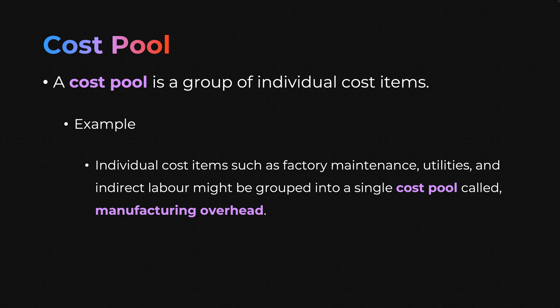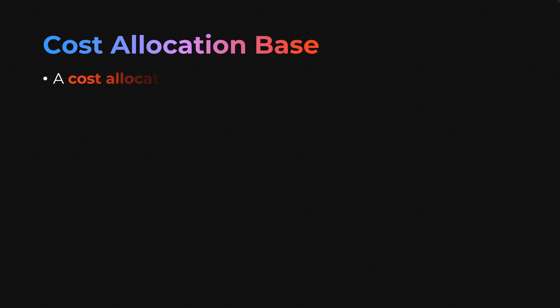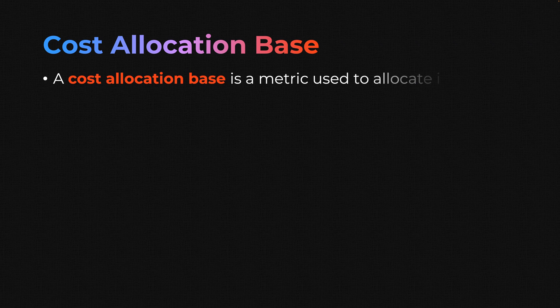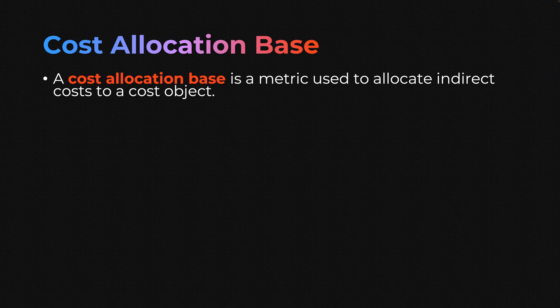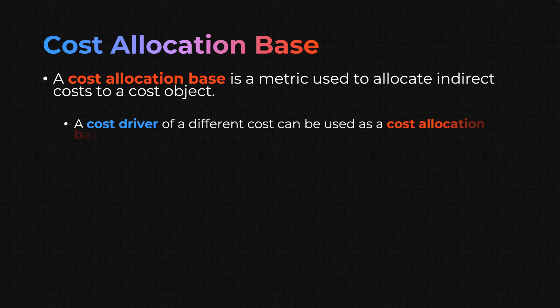Finally, the cost allocation base. A cost allocation base is a metric used to allocate indirect costs to a cost object. By metric, I mean something numerical — a number representing something. A cost driver of one cost can be used as a cost allocation base for another.